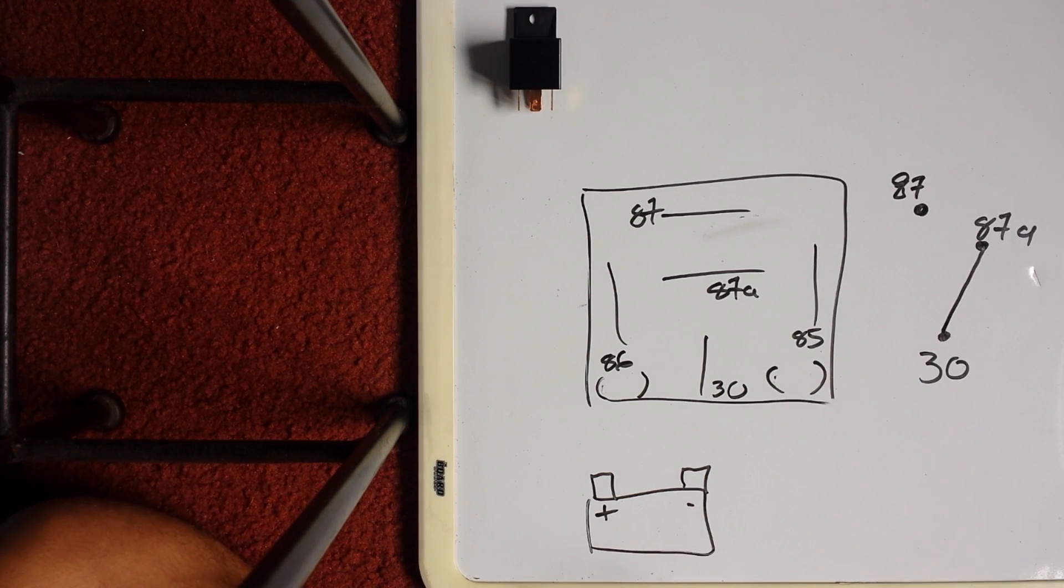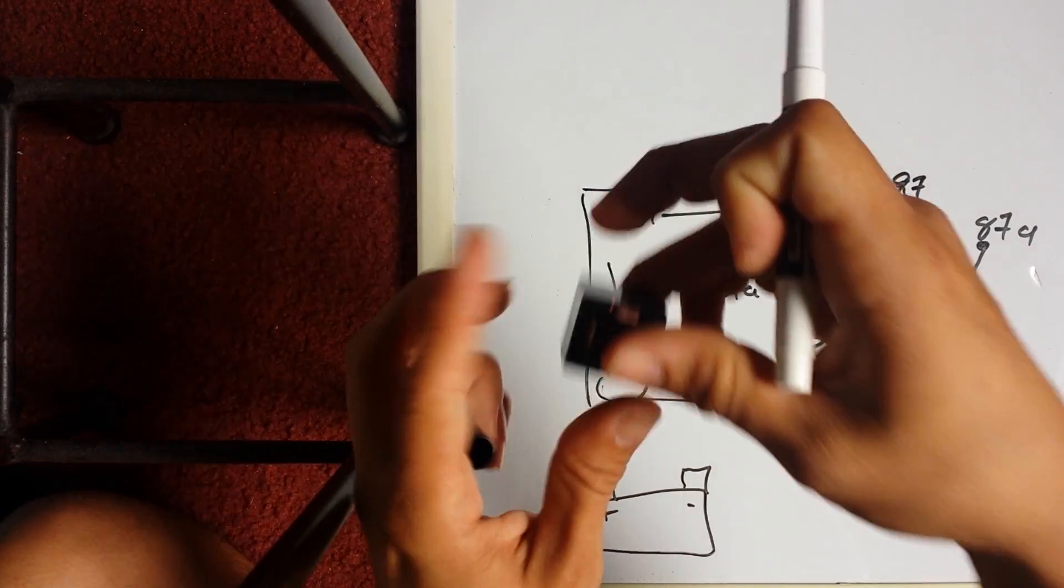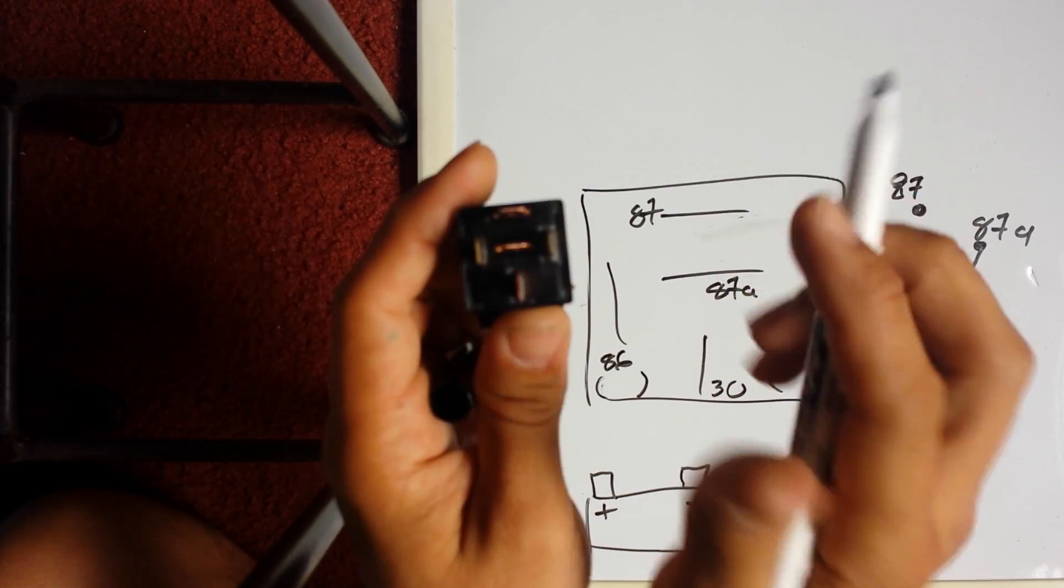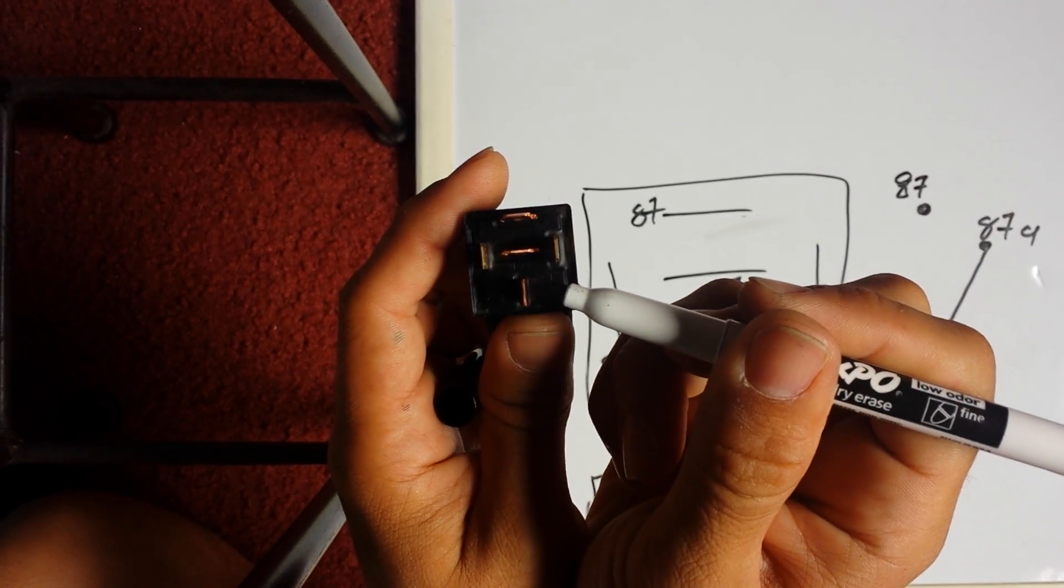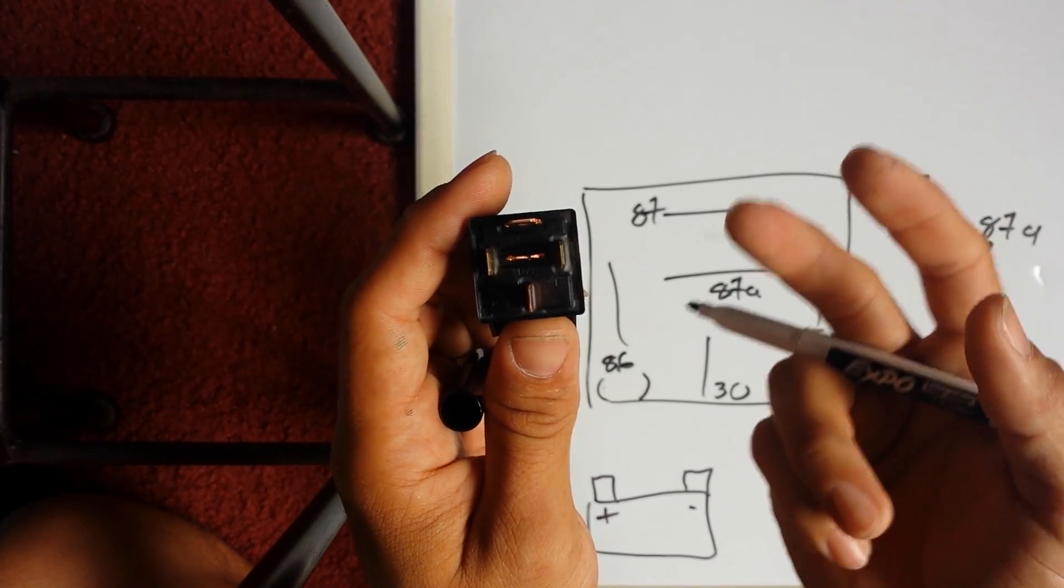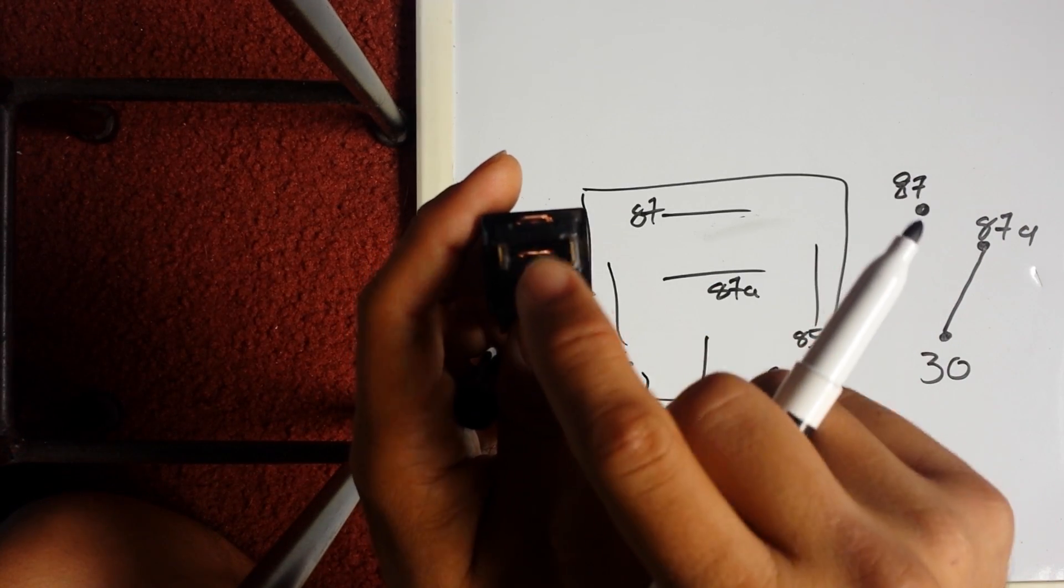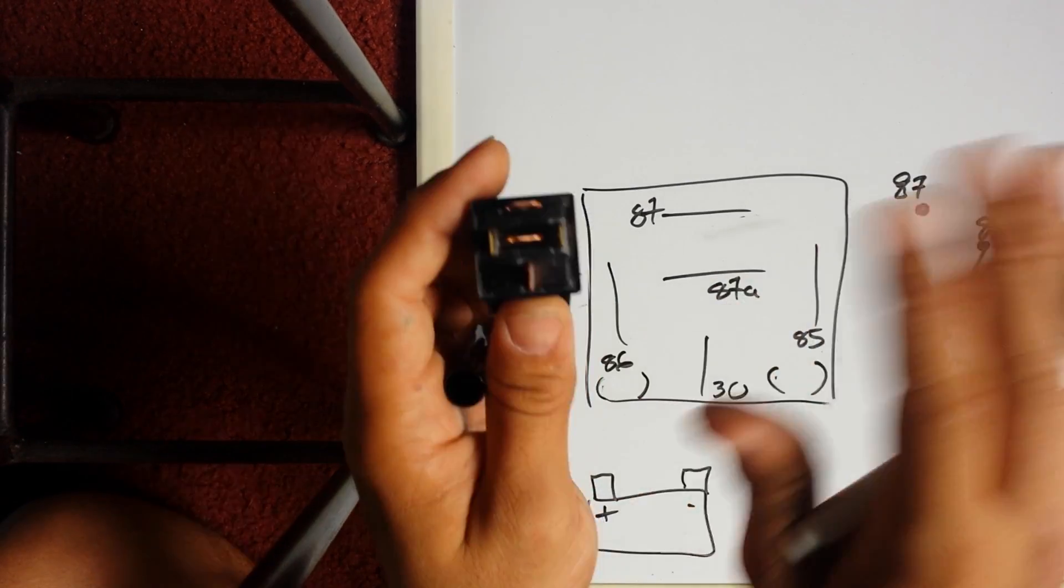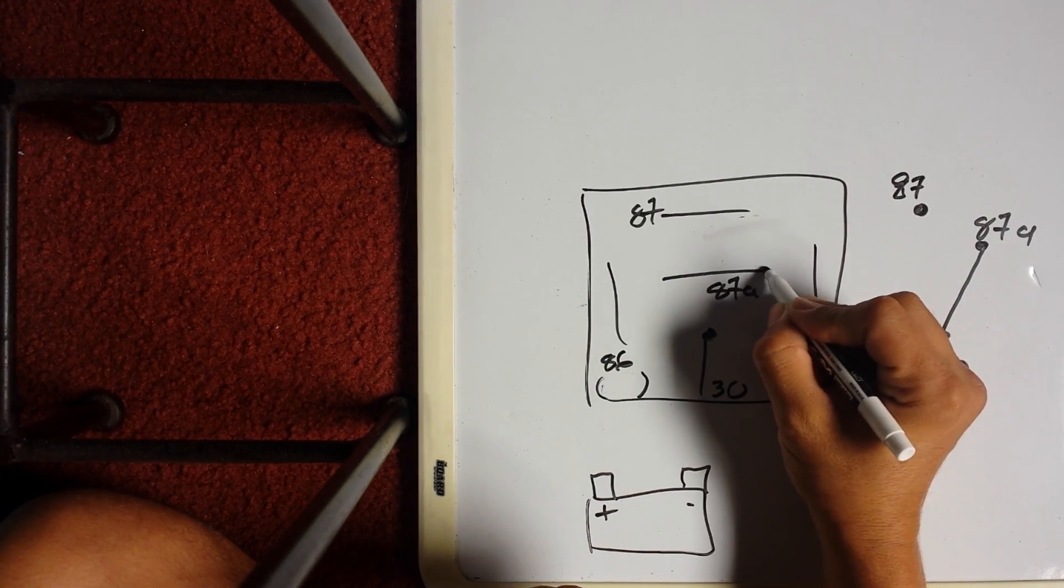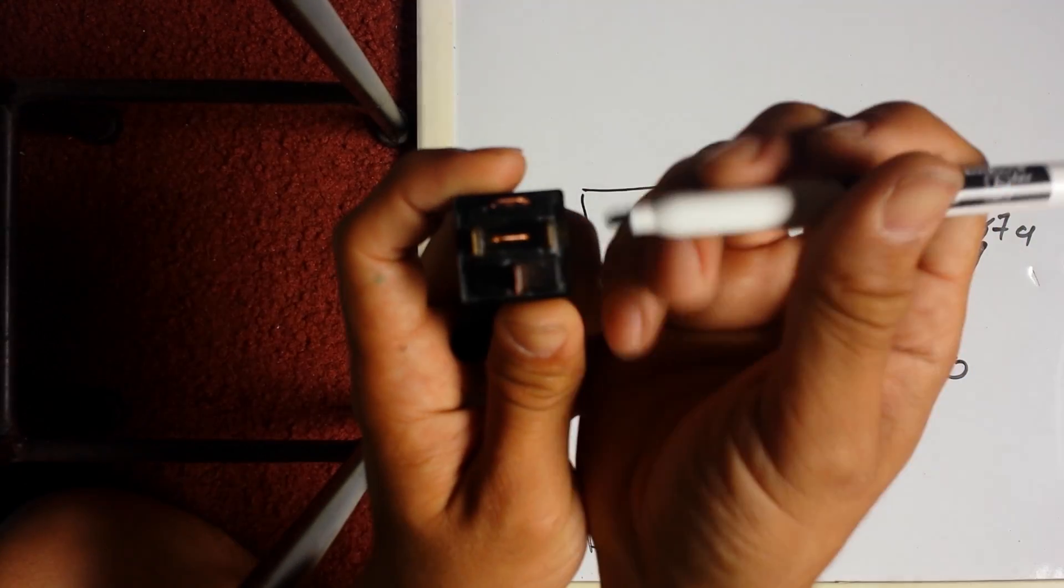So 30 and 87a are resting. All that means is that inside this relay, just imagine a wire hooking this 30 to this 87a. Basically, if you get your multimeter and put it on continuity, you'll see that there's continuity between these two at rest with no power.